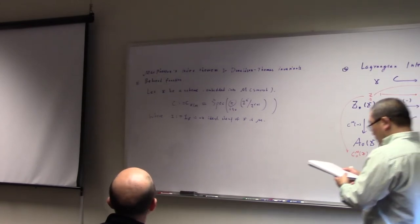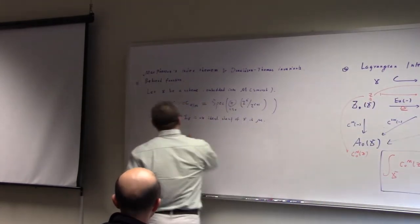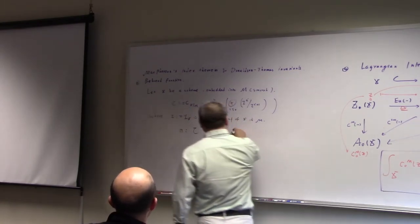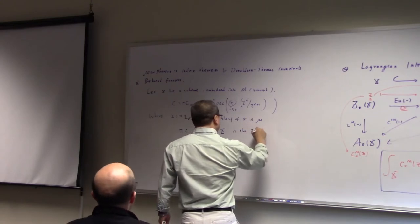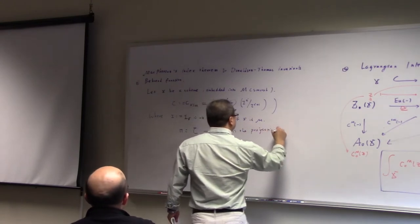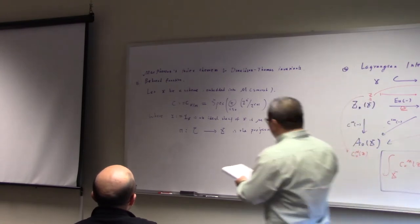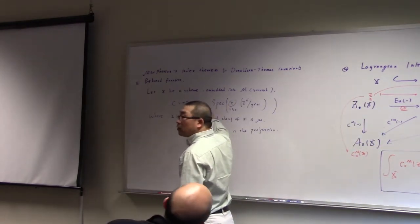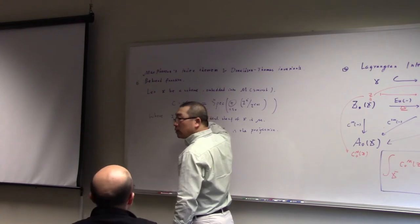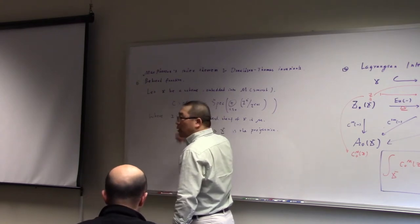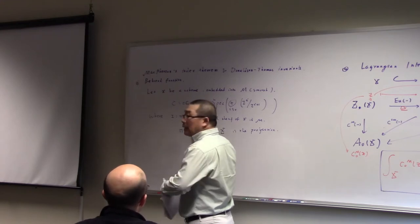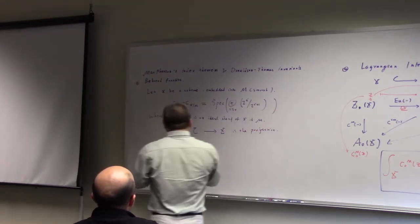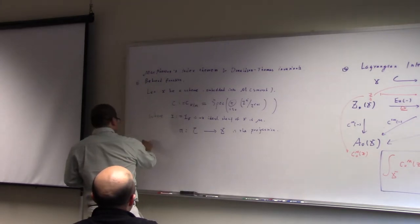So this is a normal point. And then we let π_C to X be the projection, because X is... So of course, if X is smooth, this is nothing but a normal bundle. If X is smooth, it's a regular embedding — this is a normal bundle. And then in general, this one is singular because of many components — irreducible.